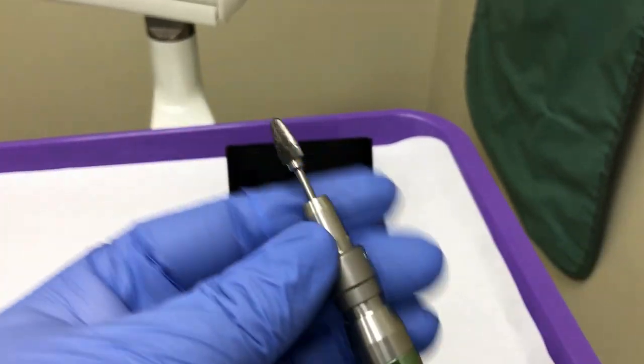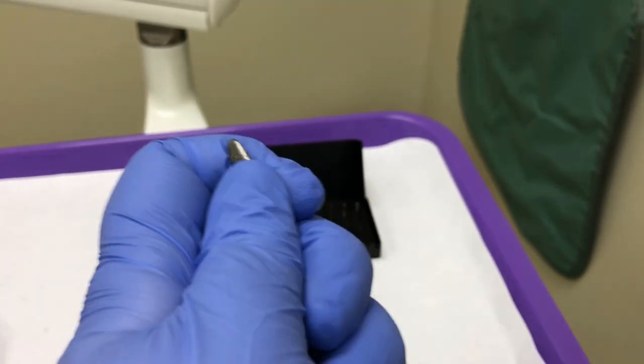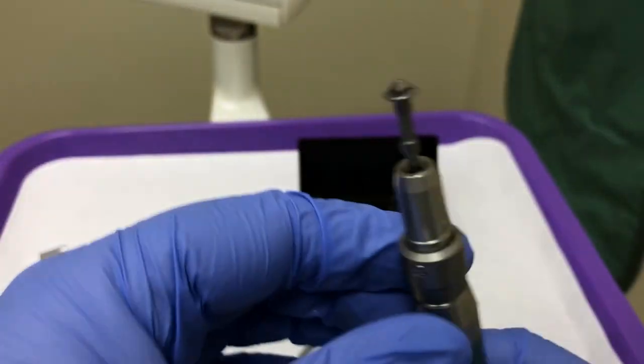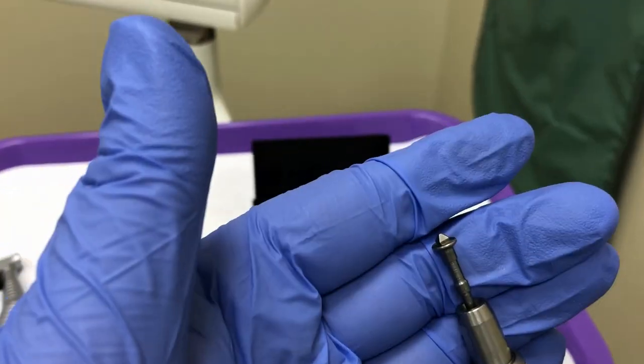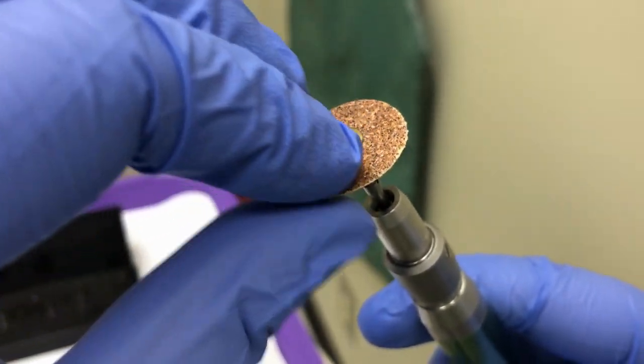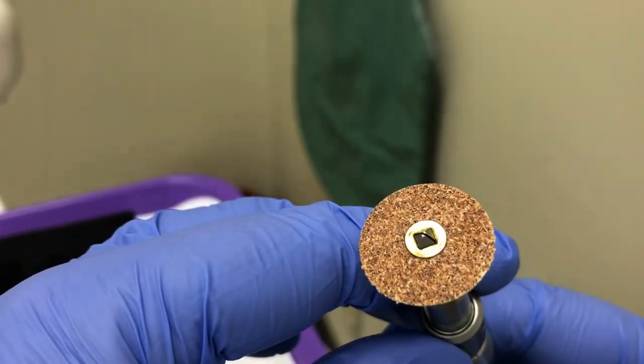Unlock the handpiece and remove the burr and insert the mandrel. Lock the mandrel in place and attach a sandpaper disc. Now the low-speed handpiece is ready to be used with the mandrel and sandpaper disc.